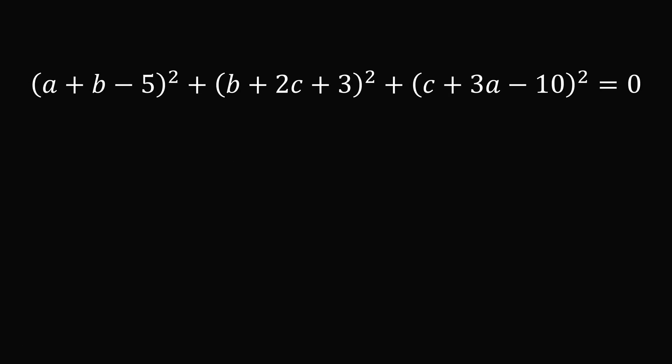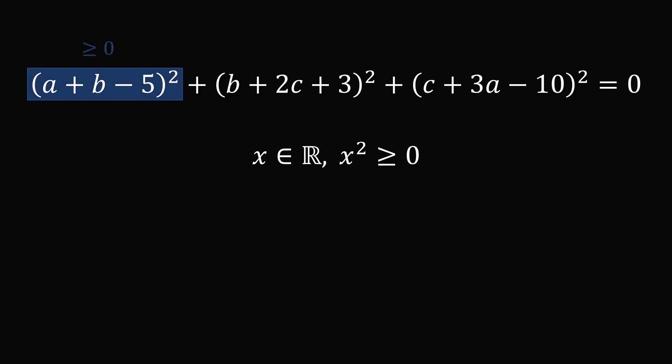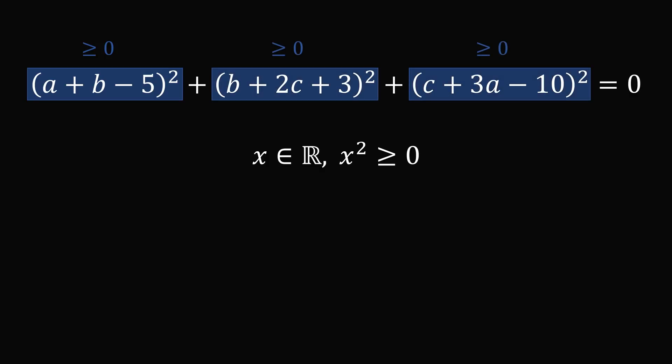So let's analyze this equation. Recall that if x is a real number, then x squared is greater than or equal to 0. That means the first square will be greater than or equal to 0, the second square will be greater than or equal to 0, and the third square will be greater than or equal to 0, because a, b, and c are real numbers. But we know the entire equation is equal to 0. If any of these terms were greater than 0, the entire sum would be greater than 0. The only way that the entire equation is equal to 0 is if each of the squares is equal to 0. But the only way that a square of a real number is equal to 0 is if the number itself is equal to 0. So each term inside of the square is equal to 0.